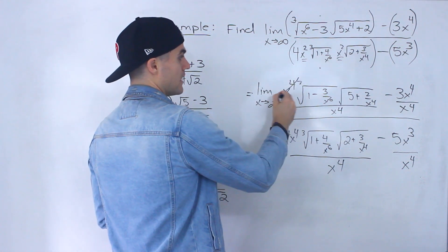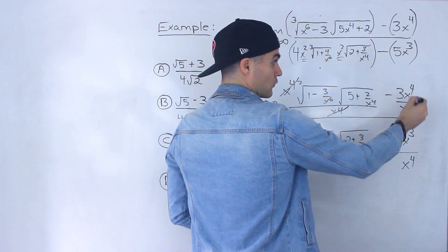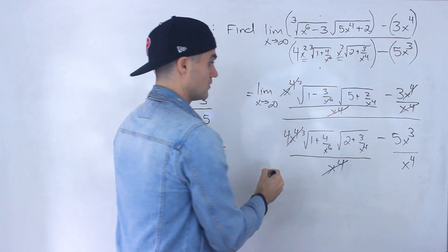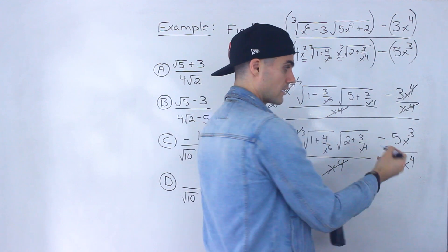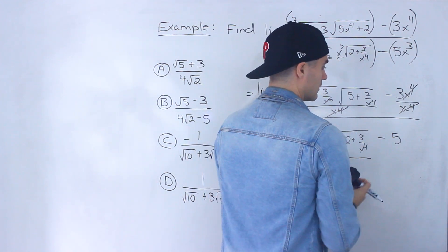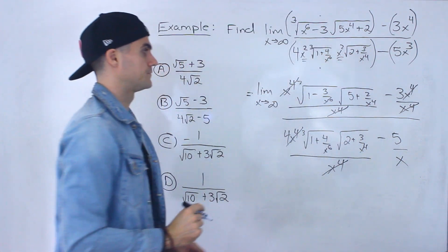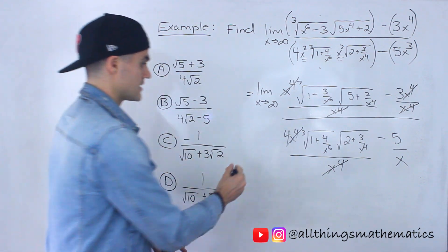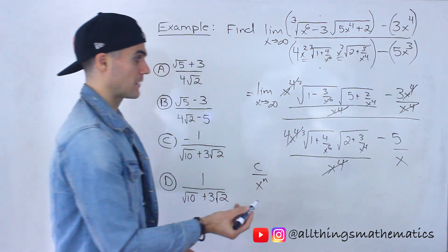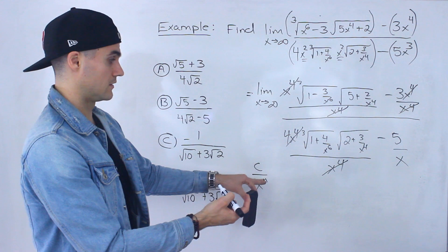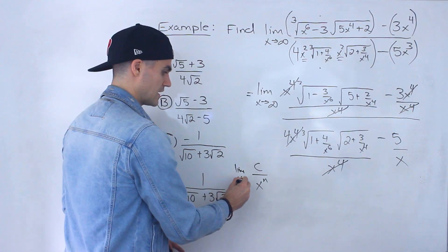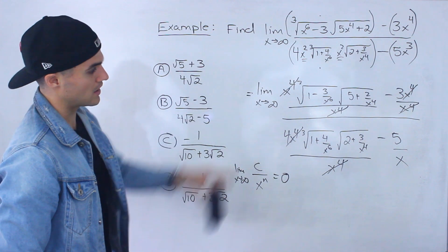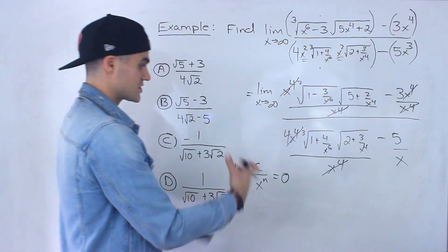So we divide this term by x to the four, this term by x to the four, and all of this by x to the four. This x to the four and that x to the four cancel out. Three x to the four over x to the four, the x to the fours cancel, leaving minus three. The four x to the fours cancel, leaving just a four. Then x to the three over x to the four gives us five over x. Now notice what formats are left: we have a constant over x to some positive exponent. We know the limit as x approaches infinity of c over x to the n equals zero where n is positive.